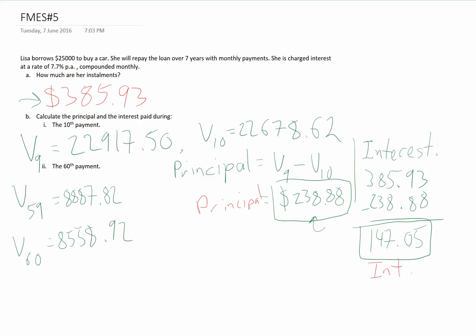So to calculate the principal and the interest, we do the same calculations as before. We need to figure out how much principal - that's V59 minus V60. I'm just going to do the calculations quickly here. So we find out that the amount of principal is $328.90, and the amount of interest is $57.03.